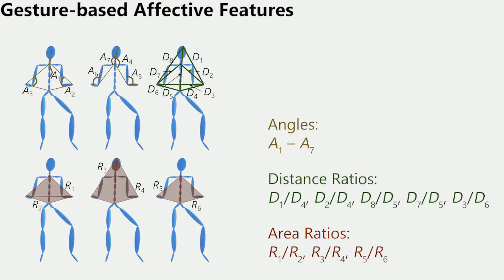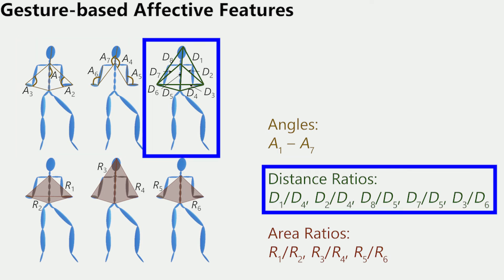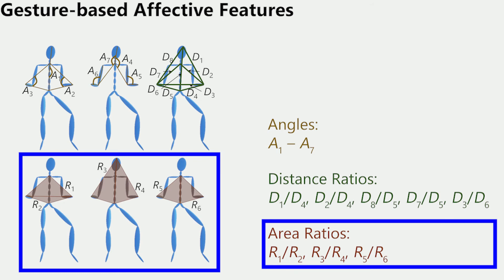In order to achieve emotional expressiveness, we add affective features into the training of our network. Since in our experiments the virtual agent is sitting down and only the upper body is expressive during the gesture sequences, only the joints at the root, neck, shoulders, elbows, and wrists move significantly. Therefore, we use these joints to compute our affective features. Our affective features are made of seven joint angles, five distance ratios between pairs of joints, and three area ratios between triplets of joints.